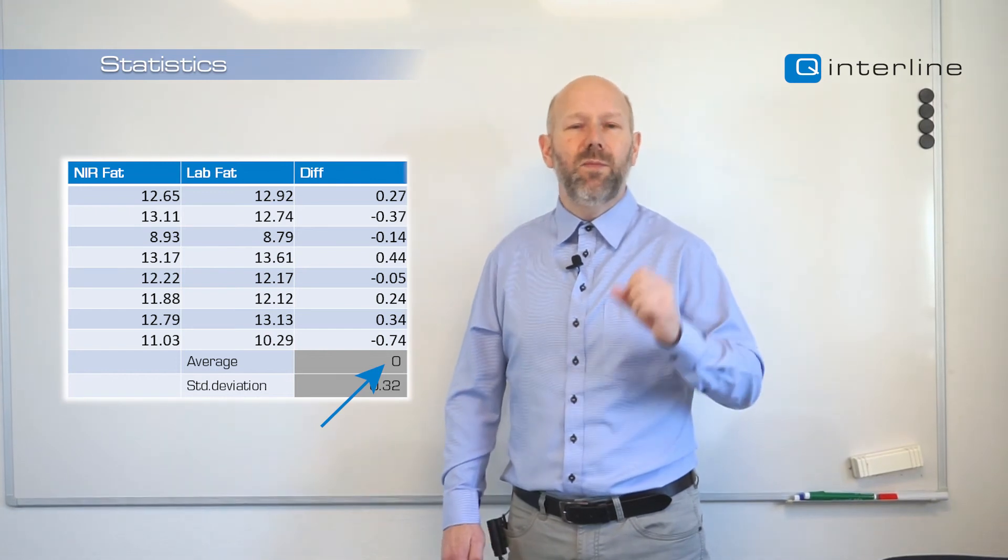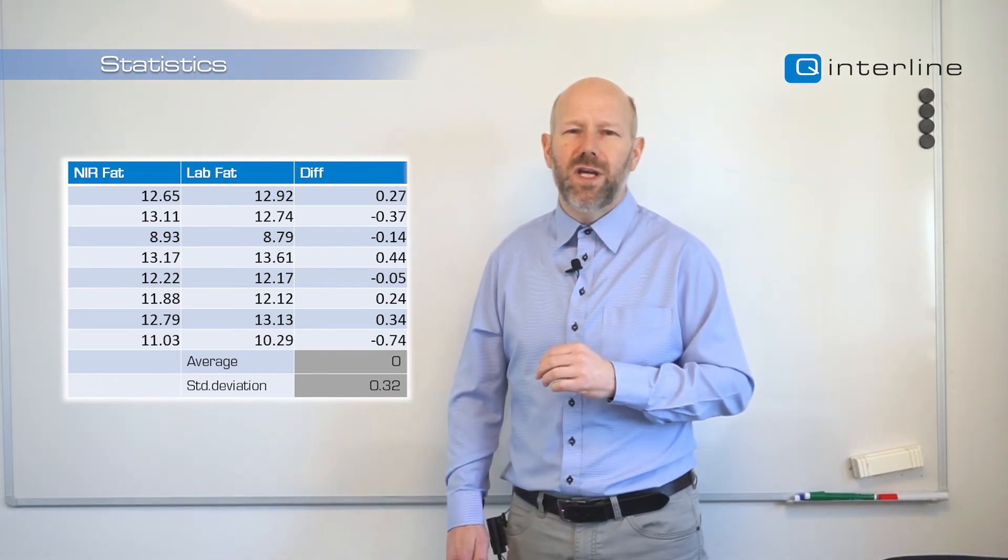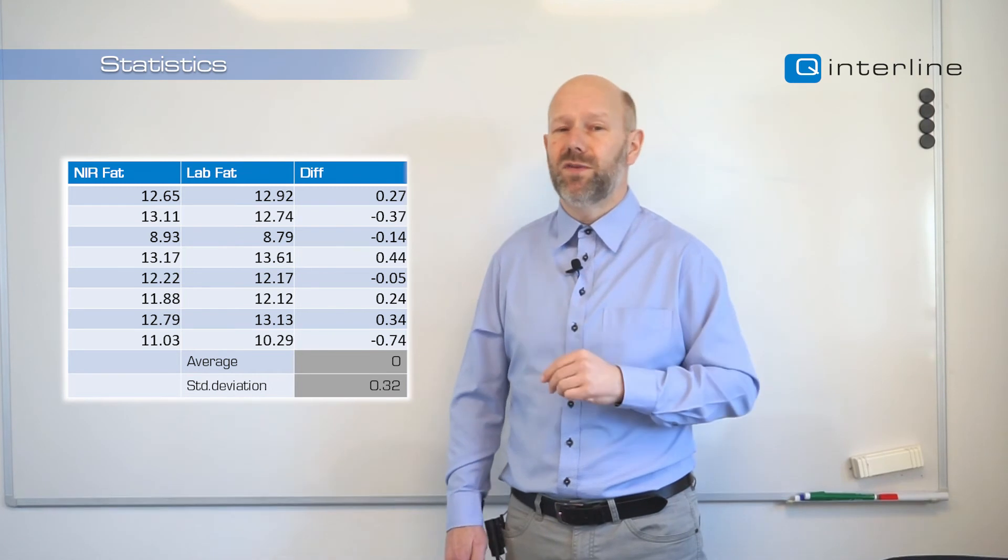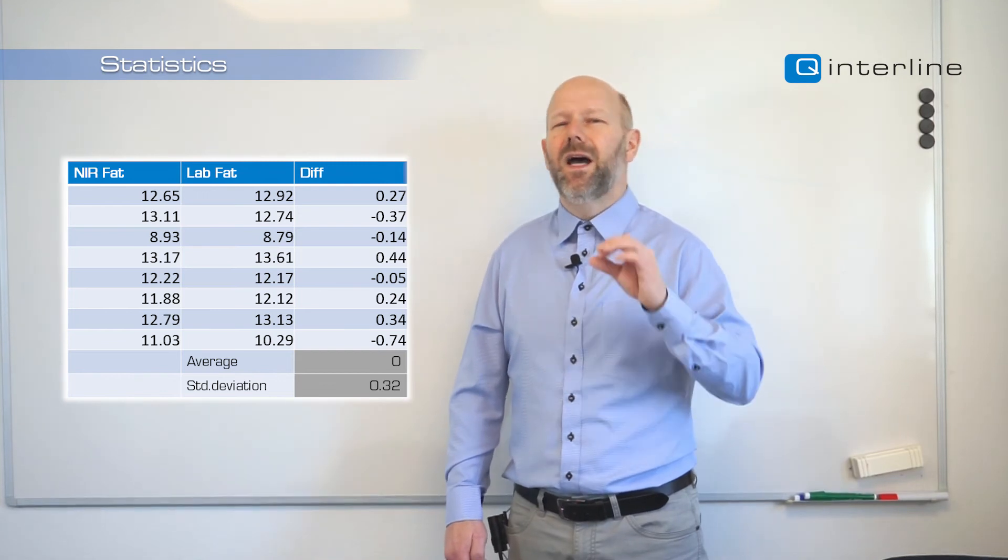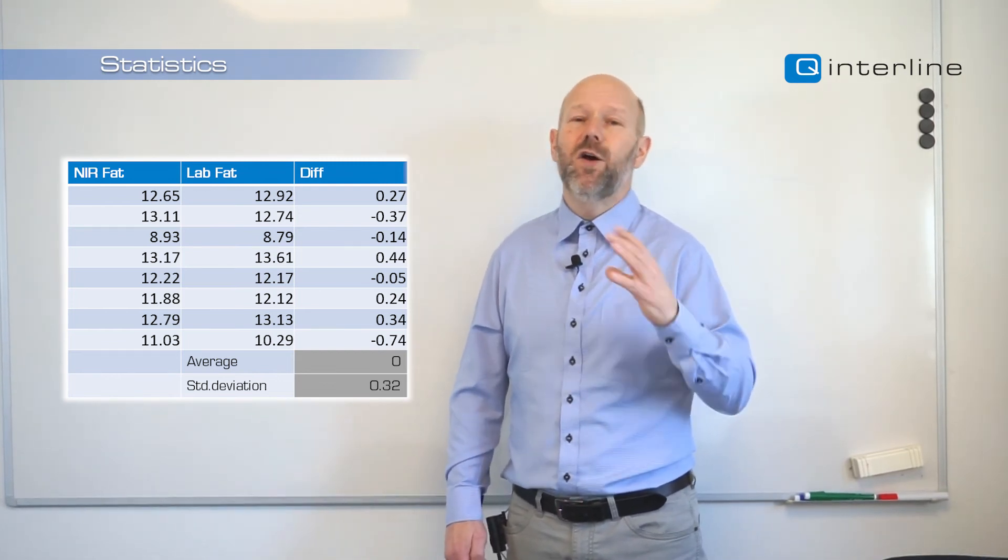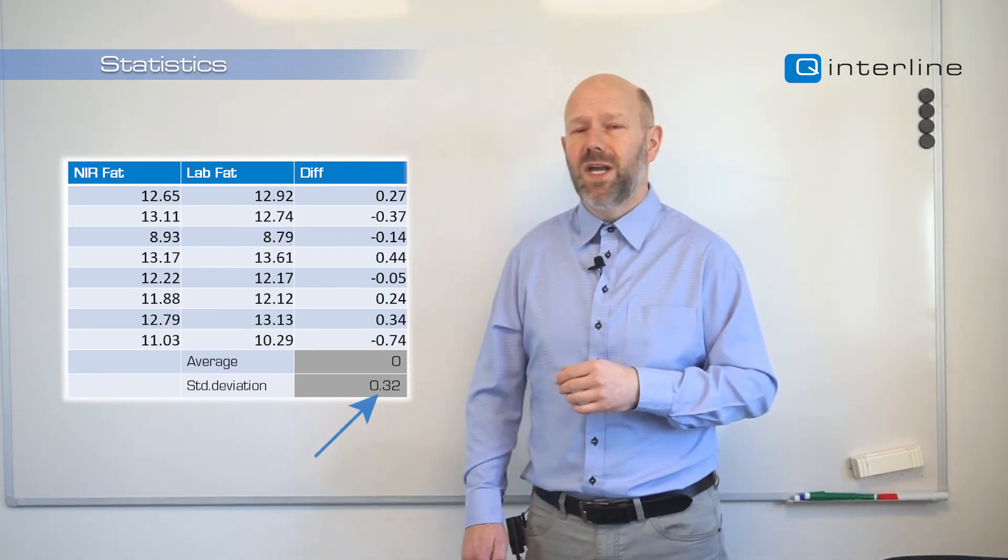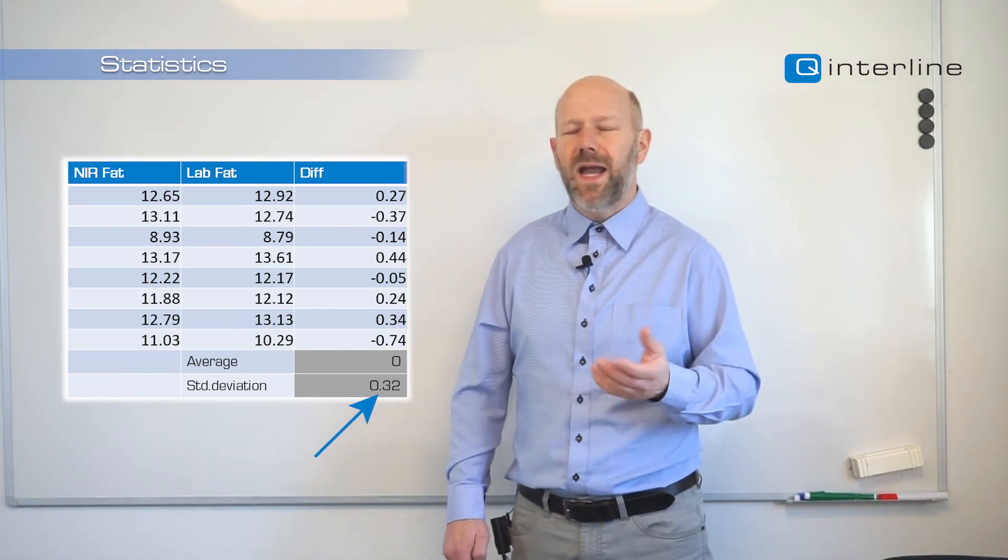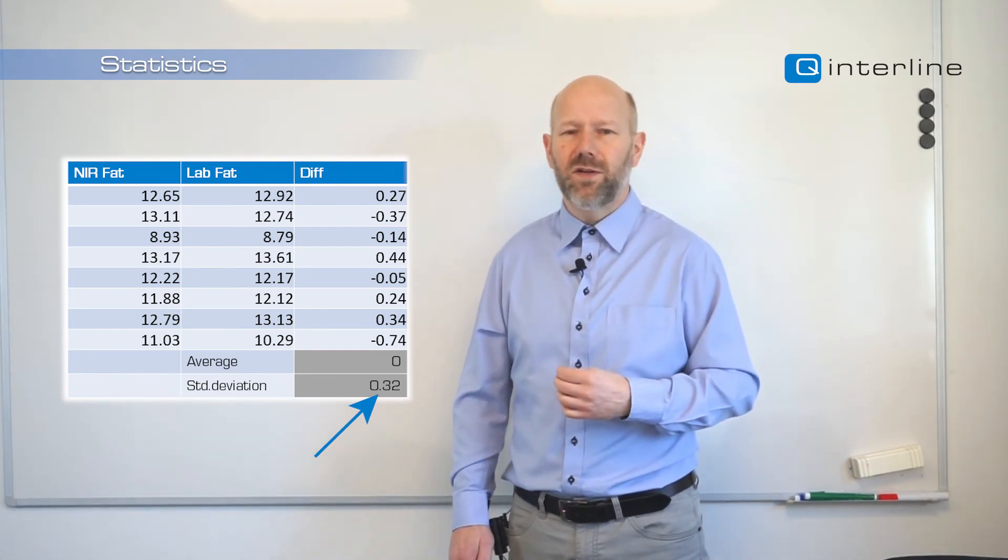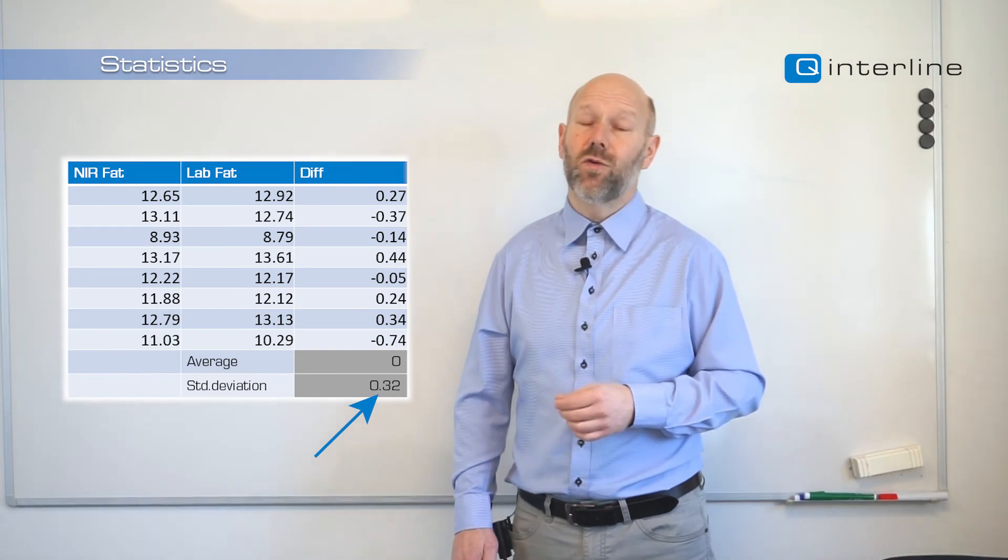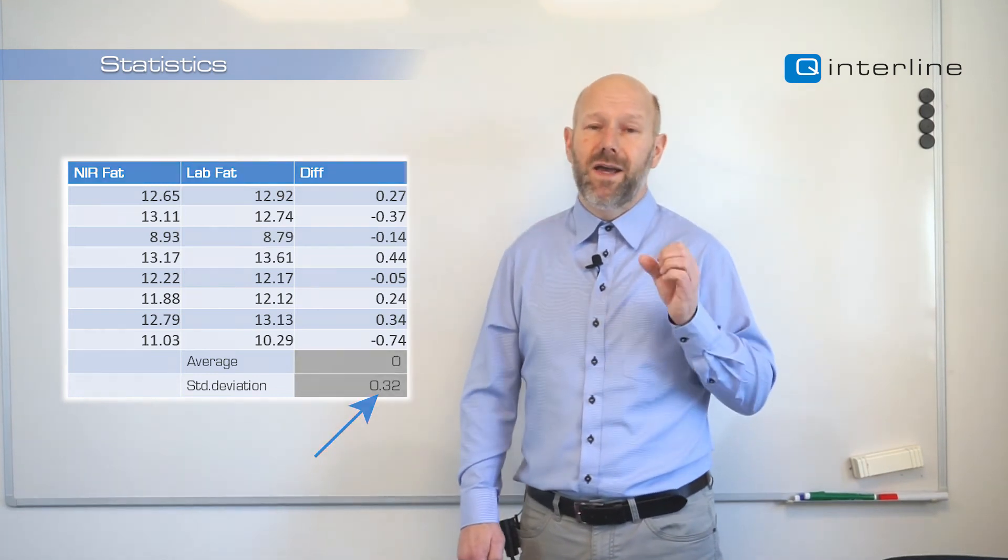But if we have like 100, we may start to see that the method is generally point something higher on the NIR than the reference lab. But the interesting thing here is the standard deviation between the two. And again, I do not advise to calculate on such a small data set, but for the sake of this class, it's good enough. We see that it's 0.32. So reference method was 0.23, and the result after validation is 0.32. Why is it not as good as the reference method? Well, because there are more error sources working with secondary technologies like NIR.